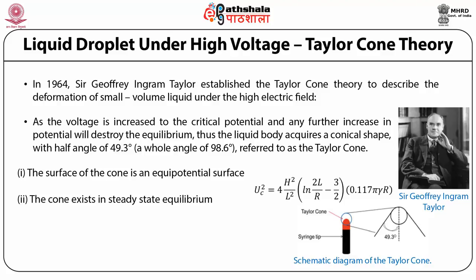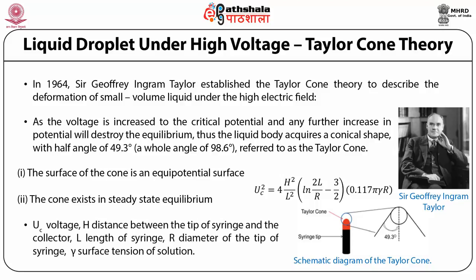The formula for the critical voltage is: U_c² = (4h²/l²) [ln(2l/r) − 3/2] × 0.117πγr, where h is the distance between the tip of the syringe and the collector, l is the length of the syringe, r is the diameter of the tip of the syringe, and γ is the surface tension of the solution.